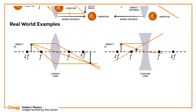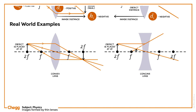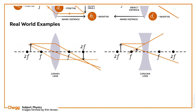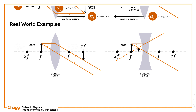If the object is placed at 2f, then the images are formed by the convex and concave lenses. We can see the images formed in the figure. If the object is placed at F, then the images are formed by the convex and concave lenses. We can see the images formed in the figure.